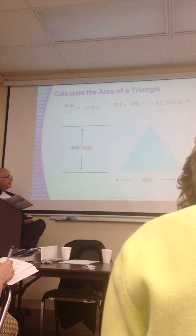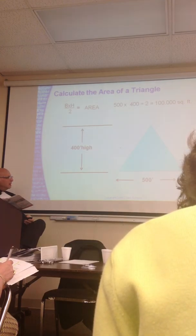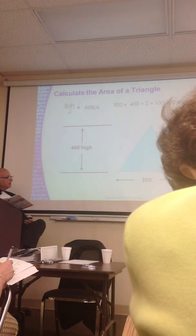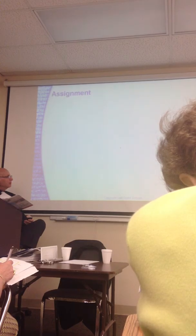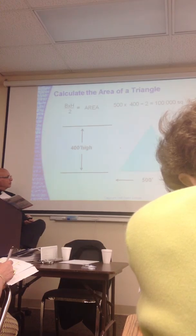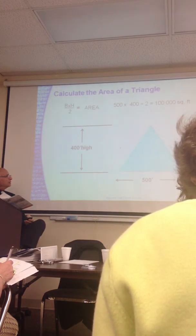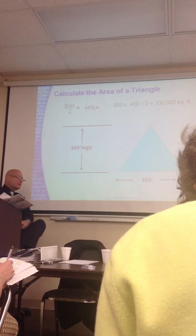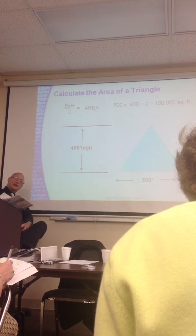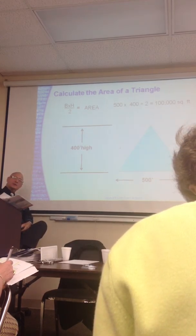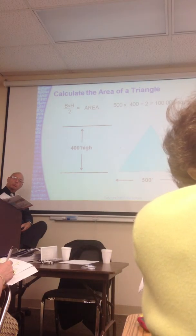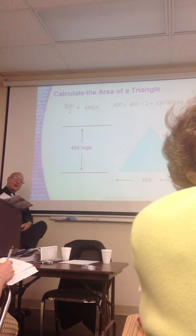If you don't do that, you get a headache. So again, 500 by 400, we have 200,000 square feet. And now, if you divide that by 2, you'd have—I'm sorry—that's 200,000 divided by 2 is 100,000 square feet.